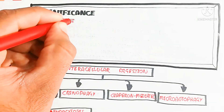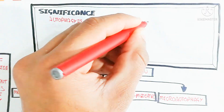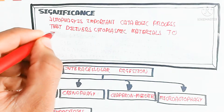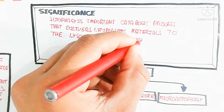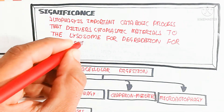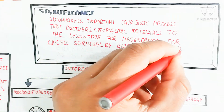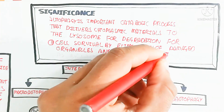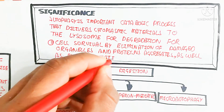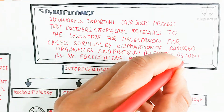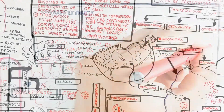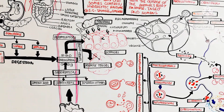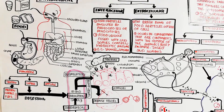Autophagy also helps prevent cancer cells. The significance of intracellular digestion is that autophagy is an important catabolic process that delivers cytoplasmic material to the lysosome for degradation, supporting cell survival by eliminating damaged organelles and protein aggregates, and by facilitating bioenergetic homeostasis. This homeostatic condition is very important for cell survival. Thanks for watching — this was the digestive system mechanism.